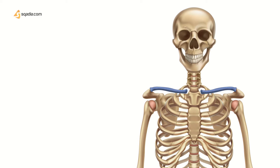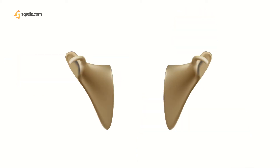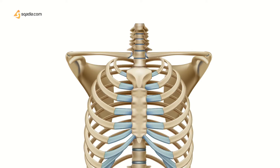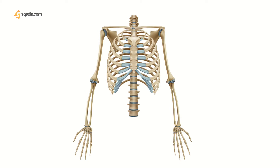The clavicle is a double curved long bone which attaches the upper limb to the trunk as a part of the shoulder girdle. The shoulder girdle is a bony ring formed by the scapula and clavicle posteriorly and manubrium sterni anteriorly. It basically connects the freely moving upper limb to the axial skeleton that comprises of head, neck and the trunk.